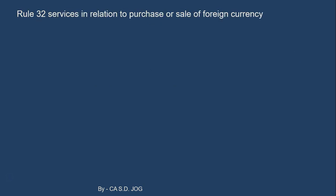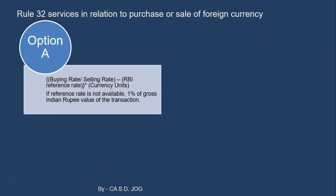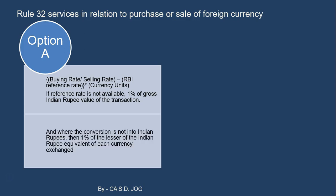Another case under Rule 32 covers services in relation to purchase or sale of foreign currency. Foreign currency dealers have the option to use this rule. There is Option A: the buying rate or selling rate difference as per RBI reference rate, multiplied by currency units. If the reference rate is not available, then 1% of the gross Indian rupee value of the transaction.